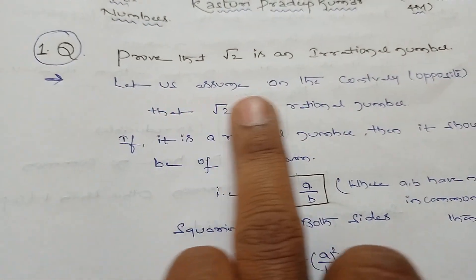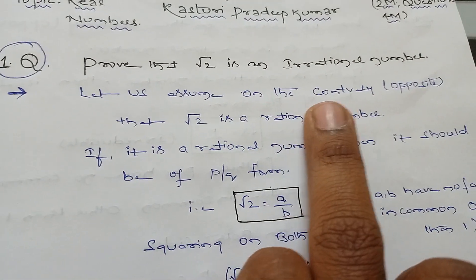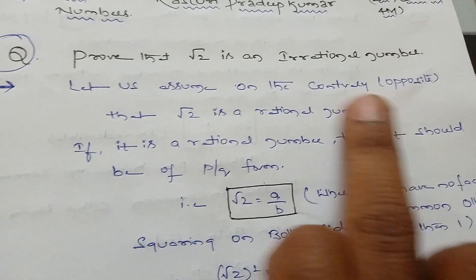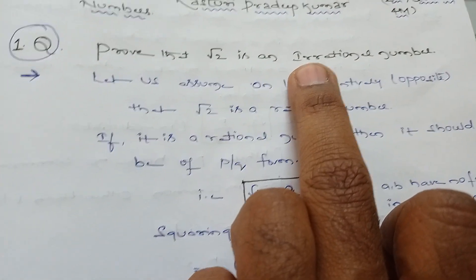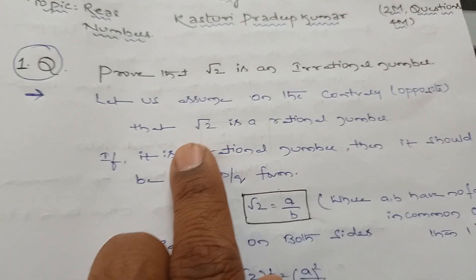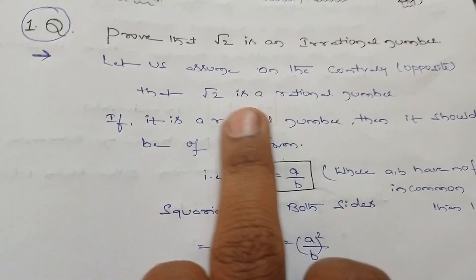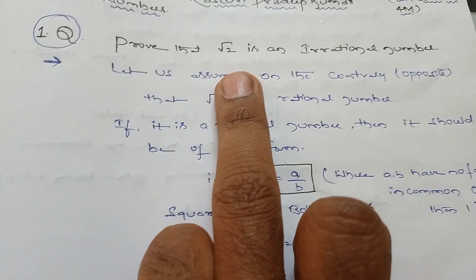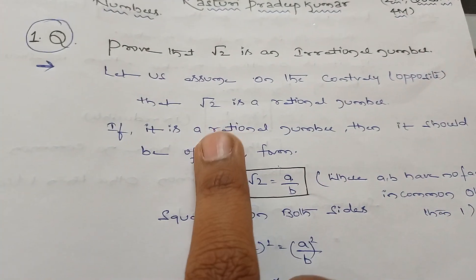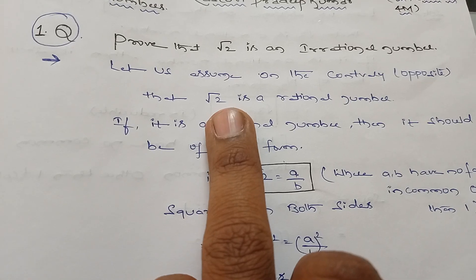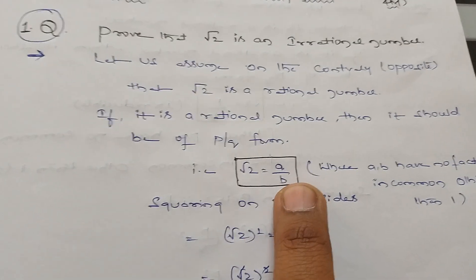Let us assume on the contrary, meaning the opposite, and we need to prove that √2 is a rational number. If it is a rational number, how can we express it? If it is a rational number, it should be expressed in p/q form.